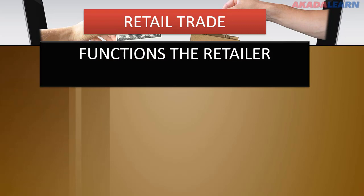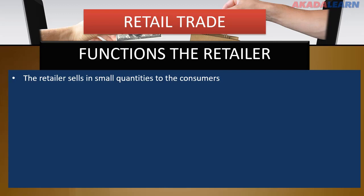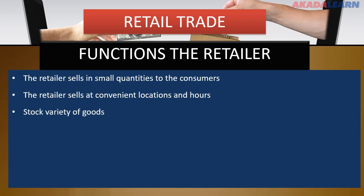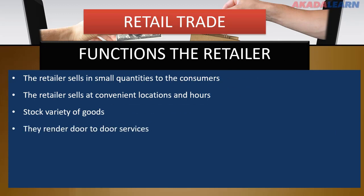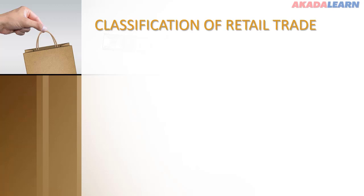What are the functions of the Retailer? The Retailer sells goods in small quantities to the consumers. The Retailer sells at convenient hours and convenient locations. The Retailer stocks a variety of goods. The Retailer renders door-to-door services. The Retailer can also sell on credit to the final consumer. The Retailer supplies information to the wholesaler and the producer.